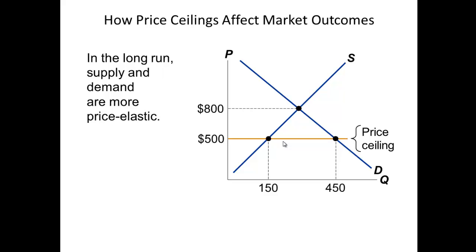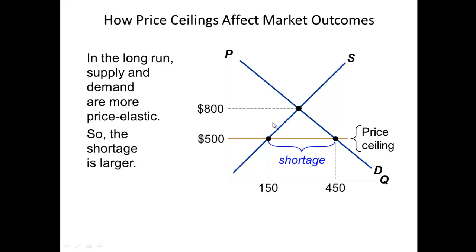That's the short-run effect. In the long run, when a price ceiling is set below market value, the shortage grows larger over time. Buyers may eventually change their tastes and preferences — remember demand curve shifters — or they continue to deal with the shortage. Suppliers may try to alter what they supply, but they can only supply so much at the controlled price. Over the long run, you still end up with an even larger shortage.